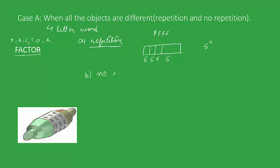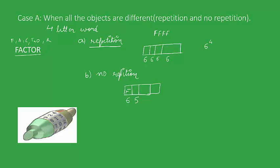The second case is when no repetition is allowed. Here we use the fundamental principle of counting. We make four compartments representing the letters of the word to be formed. The first compartment can be filled in six ways — choosing from F, A, C, T, O, R. Say we choose F. Since no repetition is allowed, we cannot choose F again, so we are left with only five more choices. Say we choose A next. Now we cannot choose F or A, leaving four choices. Going further, we are left with only three choices for the last one.